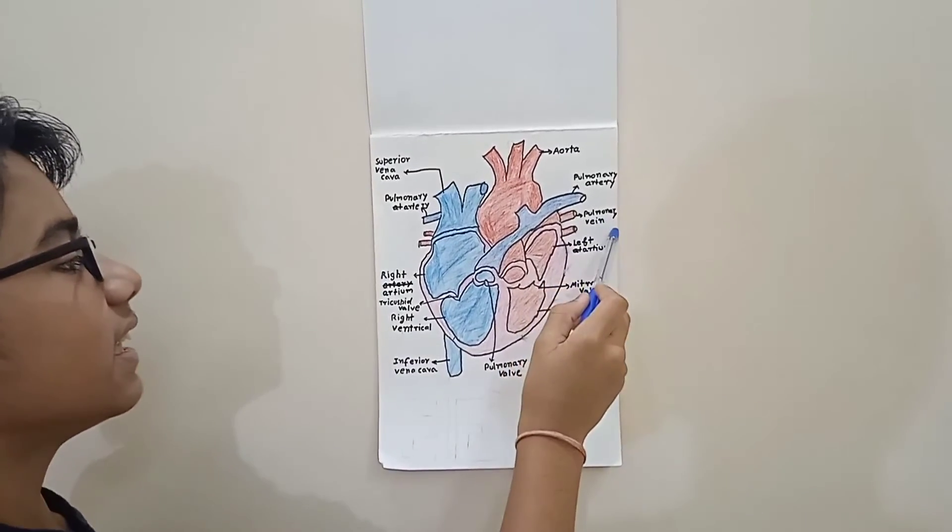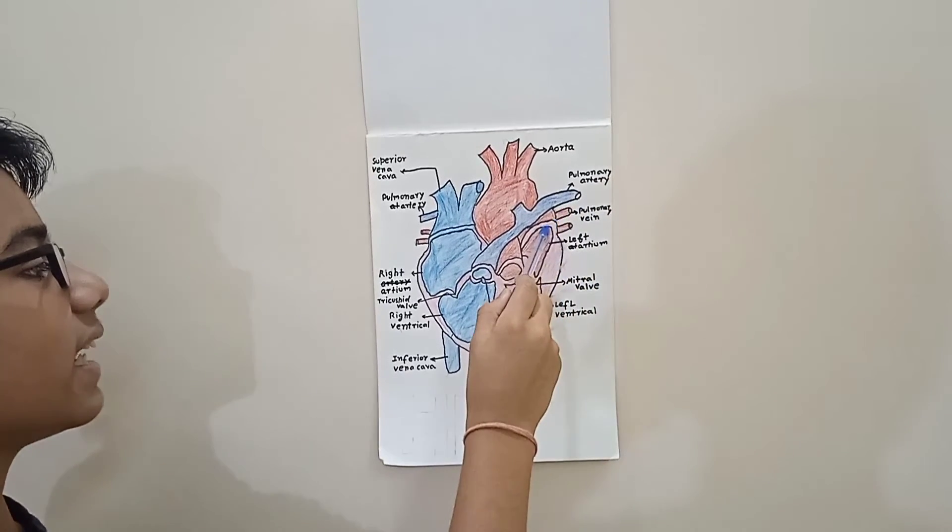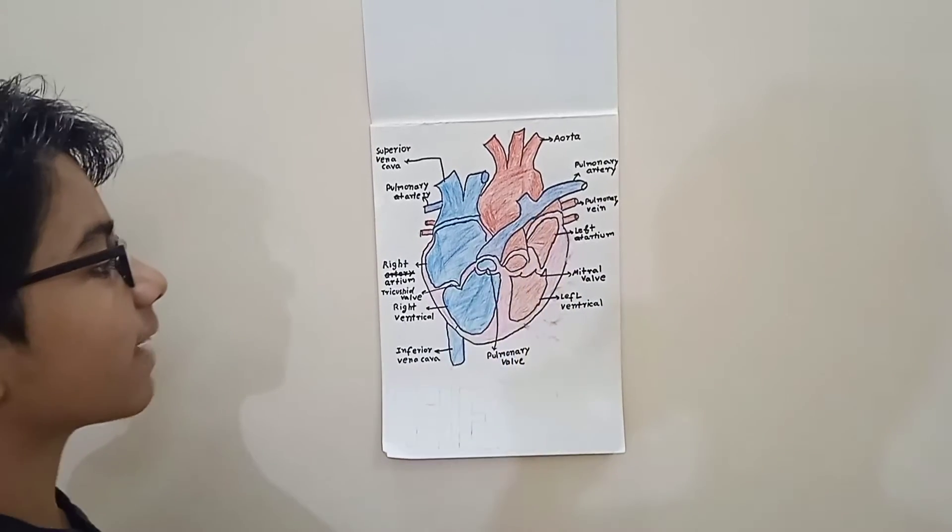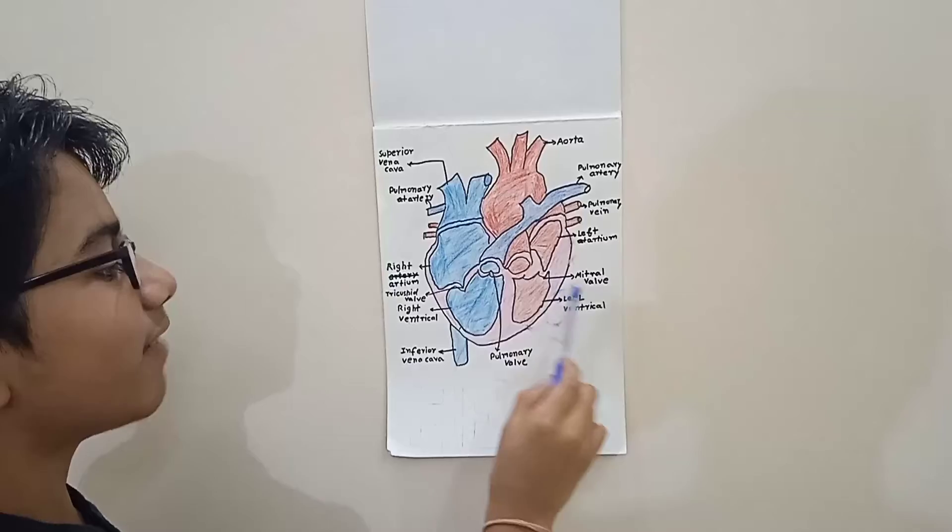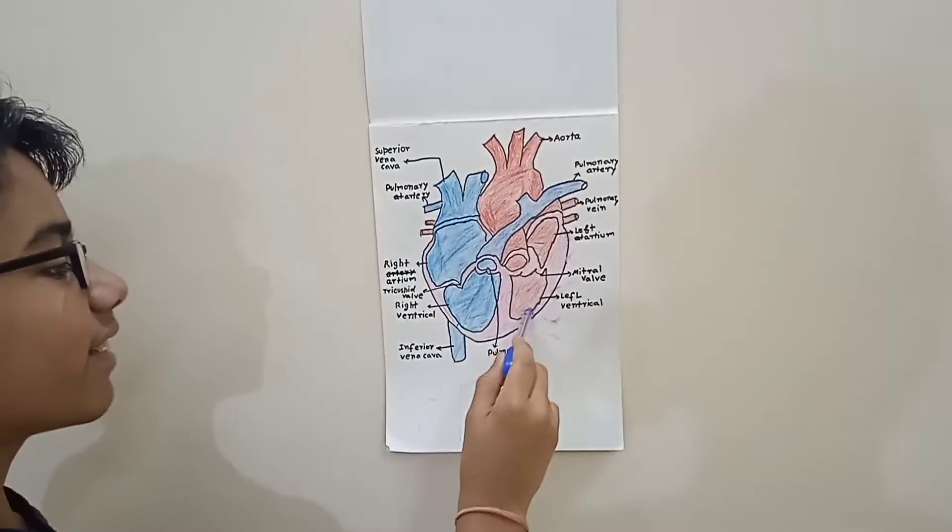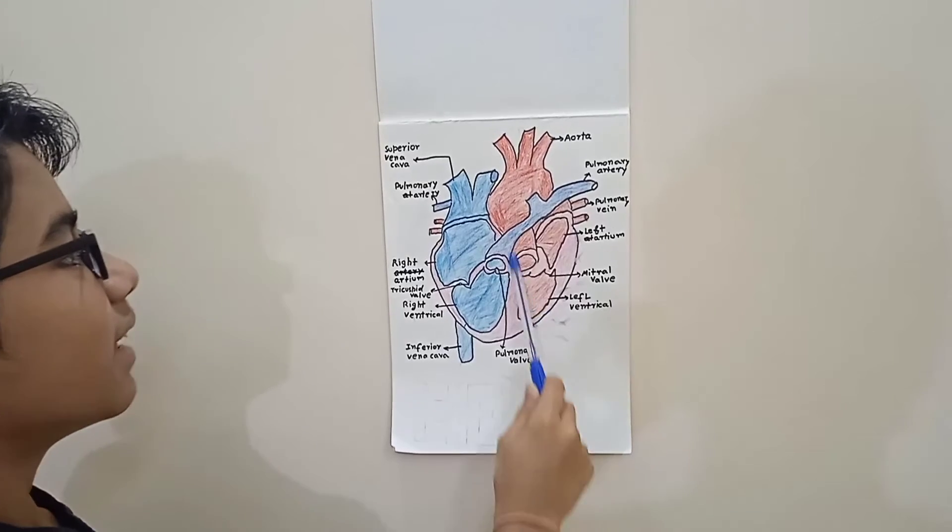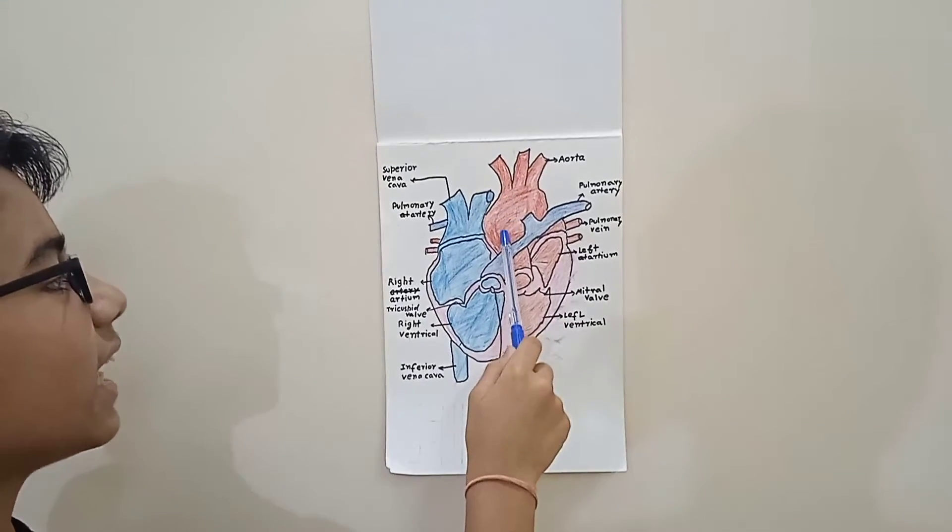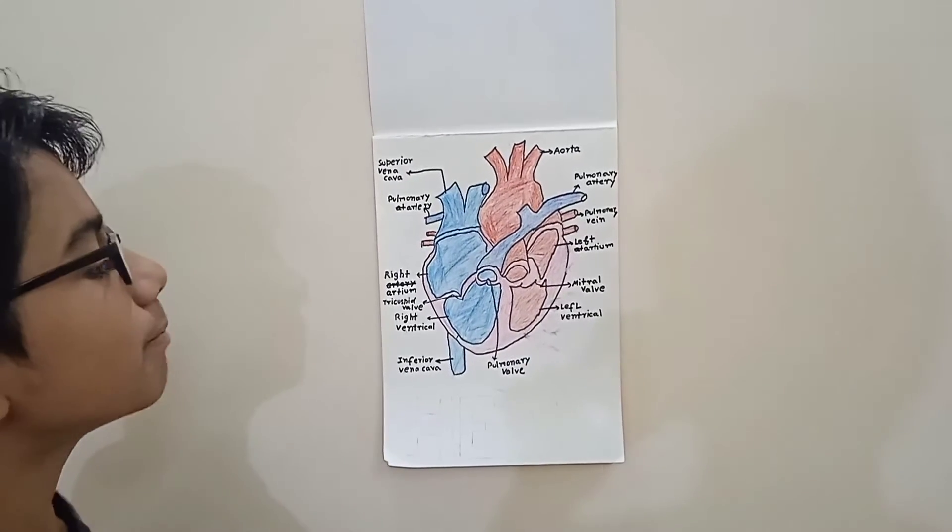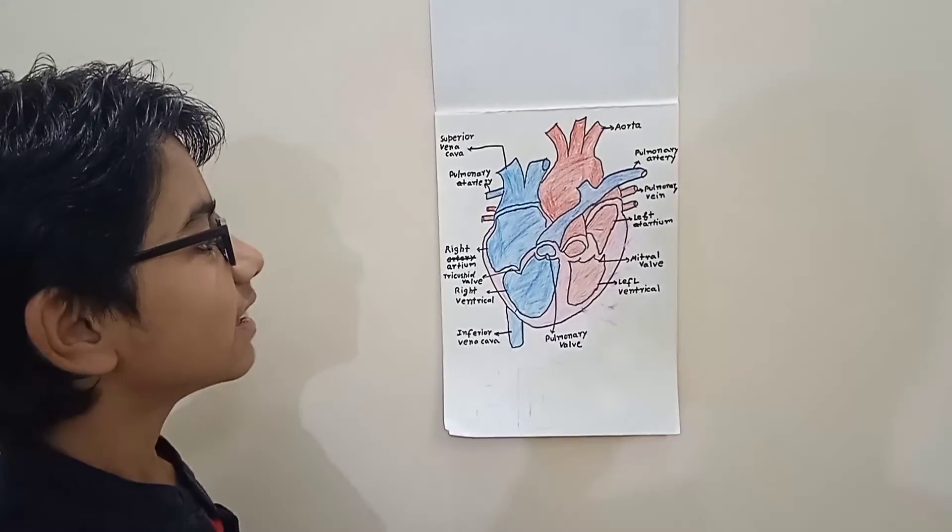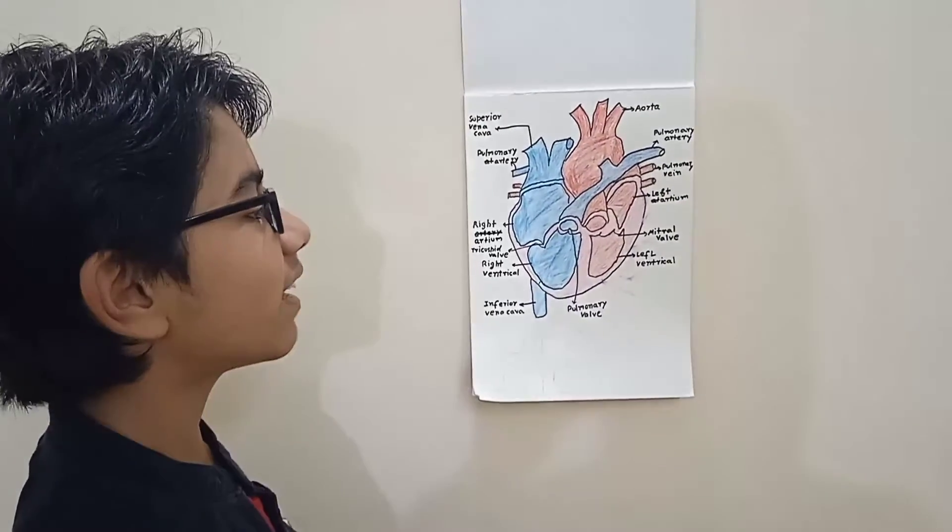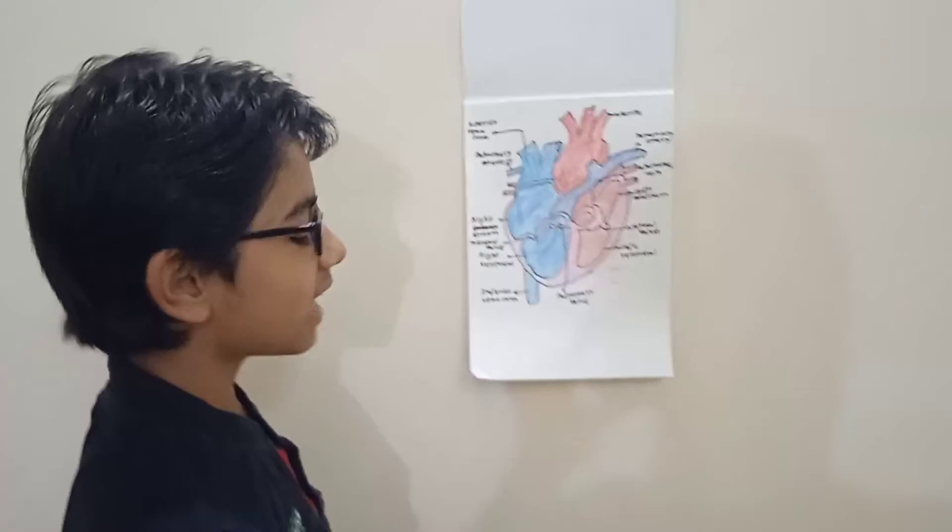Then after that, this oxygenated blood will travel to pulmonary vein and go to left atrium. Then by this mitral valve it will go to left ventricle, and from this direction it will go to aorta, and from aorta it will pump out to the whole parts of our body. So that is how the circulation of blood occurs.